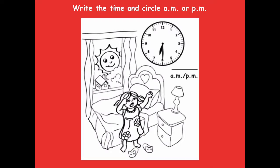When I look at this clock, my hour hand is in between the 6 and the 7, so that tells me it's going to be 6 something — that's our hour. The minute hand is on the 6, so we count by 5s: 5, 10, 15, 20, 25, 30. The time is 6:30, and I know it's AM because she's getting up in the morning, and AM is morning time.